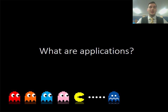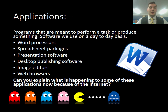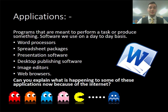We talked about what an application was and decided there were a number of applications available, but you needed to know what type of application they were. We came up with a list of six: word processors, spreadsheet packages, presentation software, desktop publishing, image editors, and web browsers.